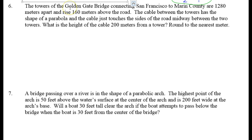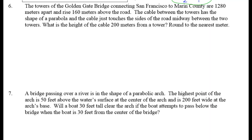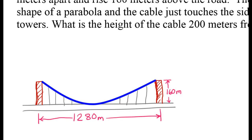The towers of the Golden Gate Bridge connecting San Francisco to Marin County are 1,280 meters apart and rise 160 meters above the road. The cable between the towers has the shape of a parabola, and the cable just touches the sides of the road midway between the two towers. What is the height of the cable 200 meters from a tower, rounded to the nearest meter? The towers are 1,280 meters apart and each tower rises 160 meters above the road.